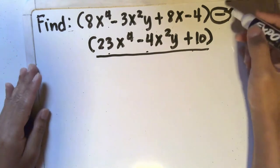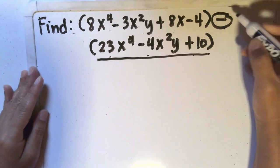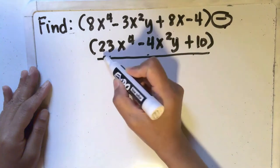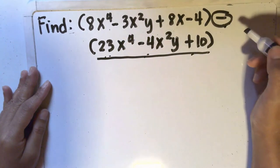It would be just the same as taking this as a negative sign and distributing this to each of these terms in the second expression.